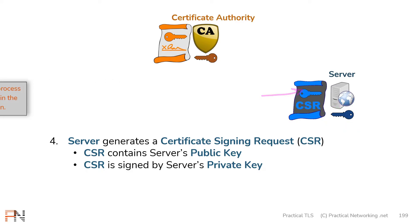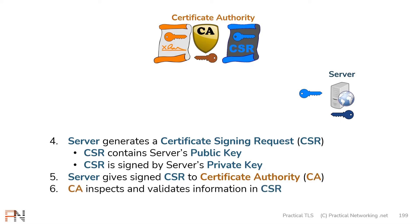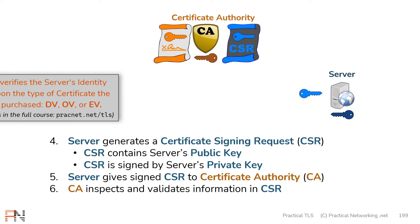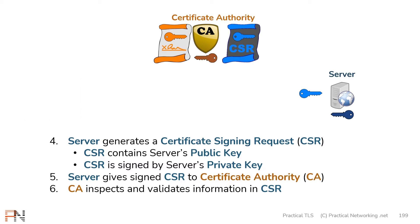This proves that the server has the correlating private key to the public key inside the CSR. This CSR is then sent to the certificate authority. The certificate authority is then going to verify the information inside the CSR — it's going to try and validate the identity of the server and make sure the server is who they say they are. There are a few different ways a CA does this, and we unpack all of them in the full course.